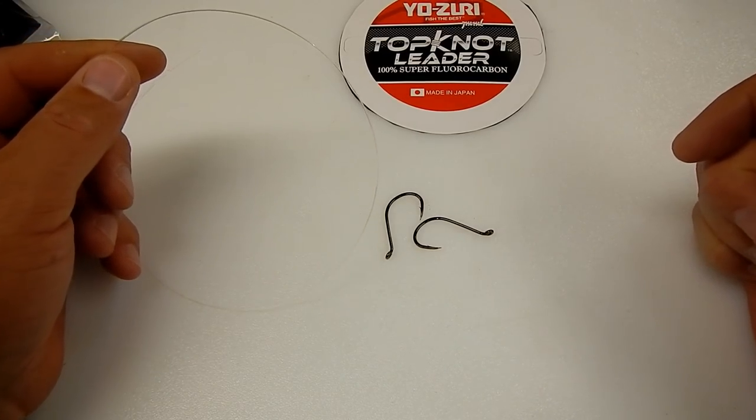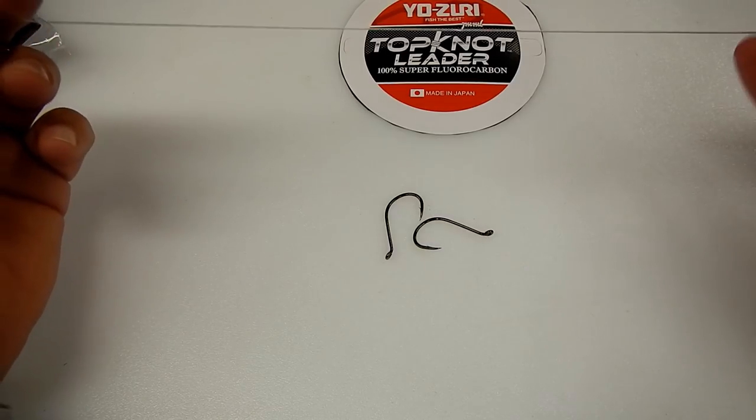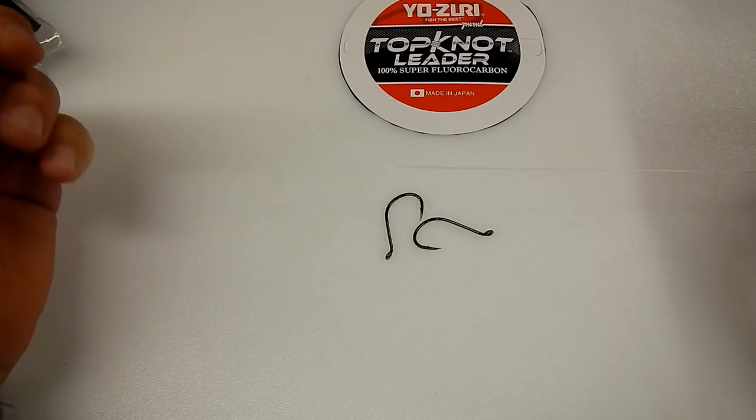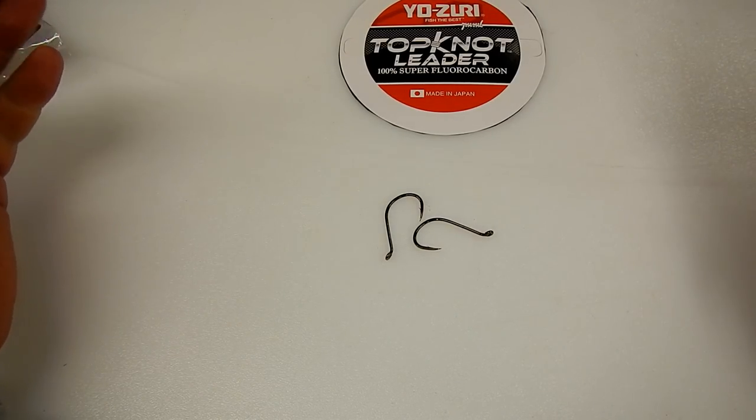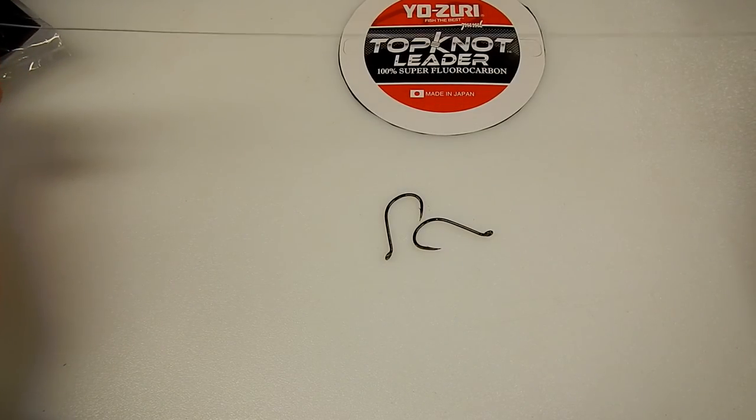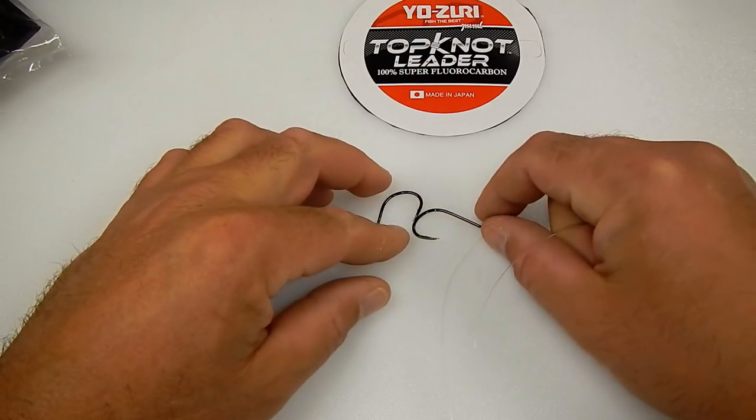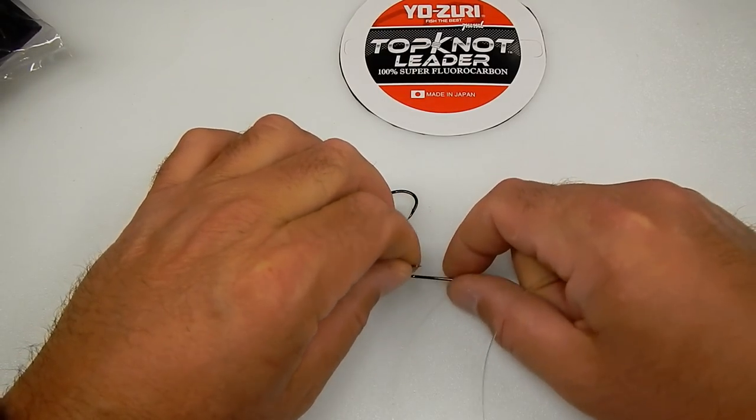In this video I'm going to take you through the steps to make the famous snafu rig used for blackfishing when using whole crabs. Simply start with a one and a half foot section of fluorocarbon leader. This happens to be Yozori Topknot leader, 50 pound test.